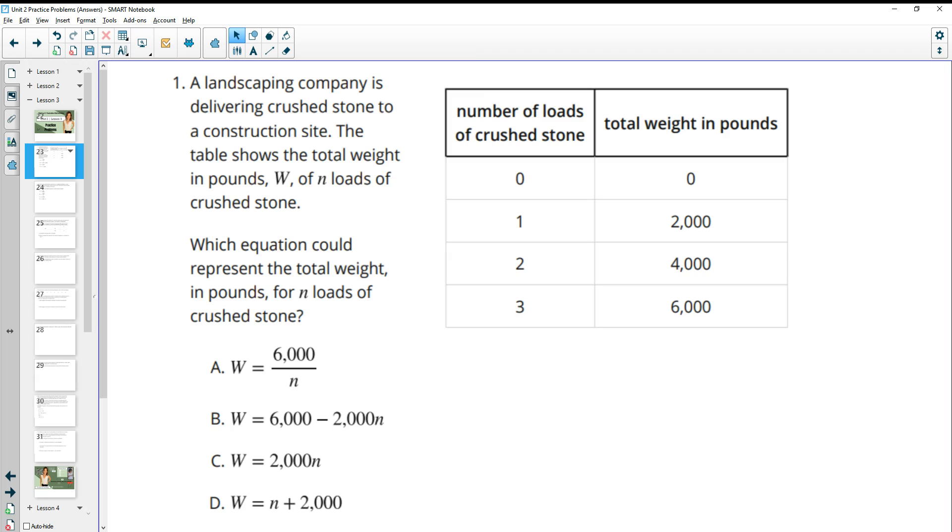Number one gives us a table for a landscaping company that's delivering crushed stone to a construction site. The table shows the weight in pounds, which they're calling W, and the number of loads of crushed stone N. So zero doesn't really tell us anything. The one tells us that one load is 2,000 pounds.